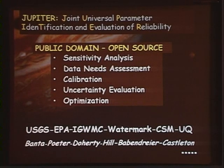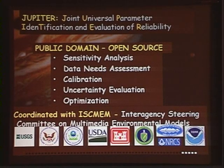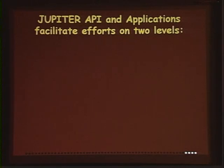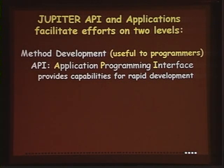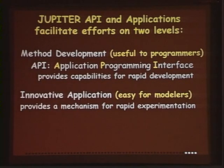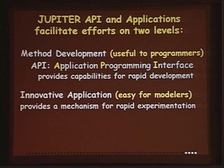I've worked with Ned Banta, John Doherty, Mary Hill, Justin Babadyer, and Carl Castleton, coordinating with several agencies in hopes of establishing a standard data structure. JUPITER facilitates efforts on two levels: for programmers it offers modules so they don't reinvent the wheel and can focus on their specific algorithm. For users, switching to another JUPITER application only requires adding a few extra parameters — all existing data is already in the structure and output is ready for post processors.